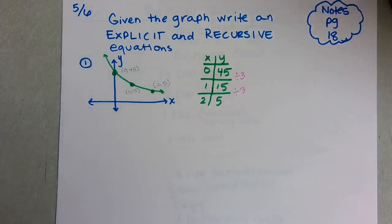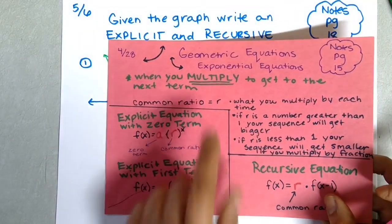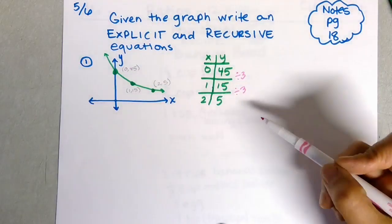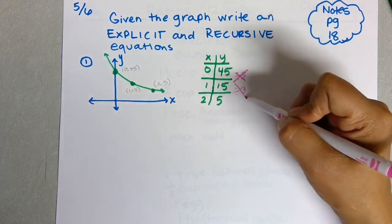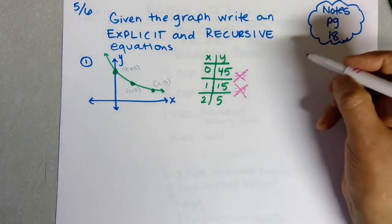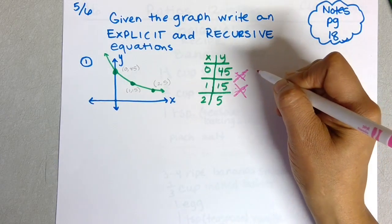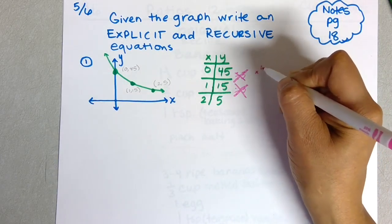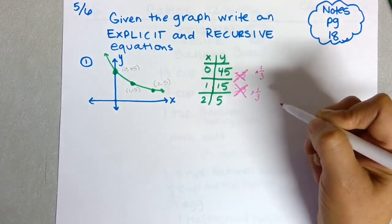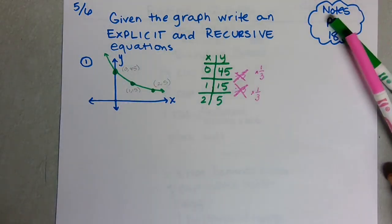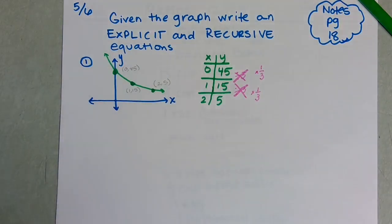The problem is we only have geometric sequences, and in geometric sequences you have to multiply—you cannot say that you are dividing. So in this case, if you're dividing by 3, it's the same thing as multiplying by 1/3.